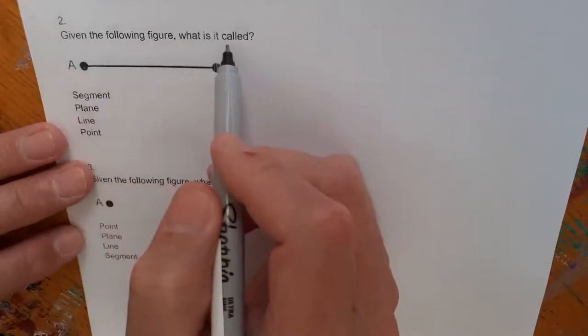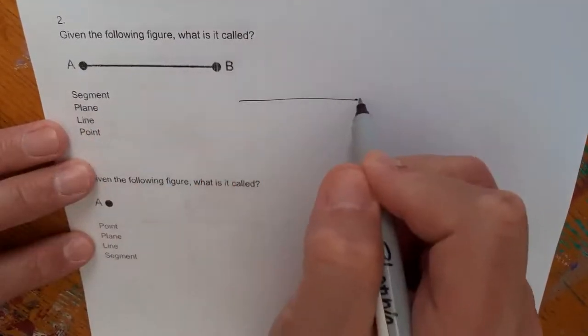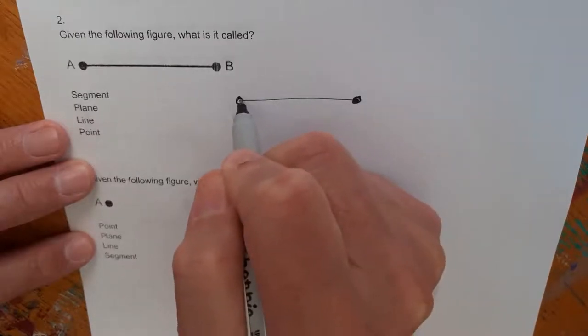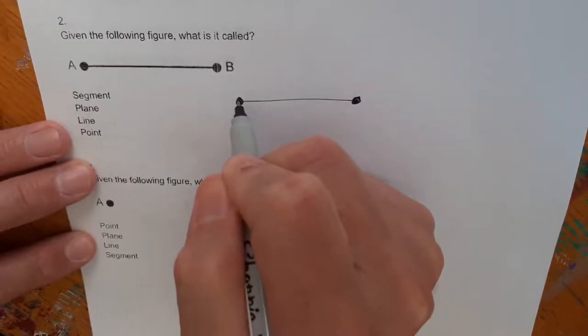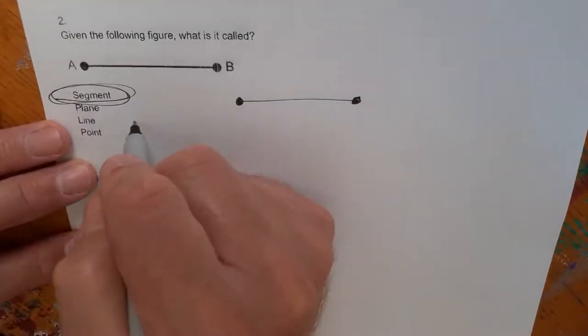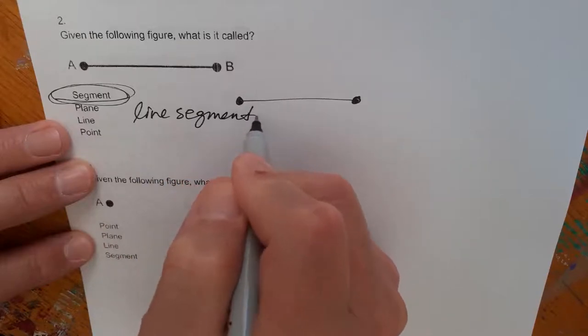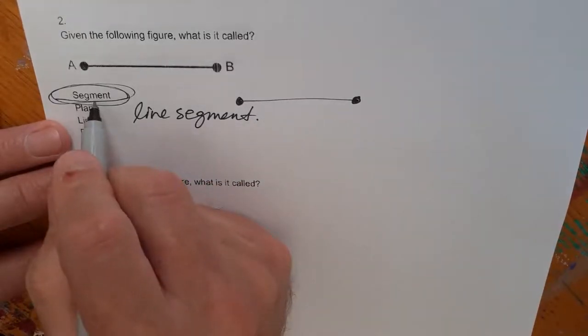Given the following figure, what is it called? This one does not have arrowheads on both sides. This one's got points. The points designate that there's a start and a stop. This is called a segment, or a line segment.